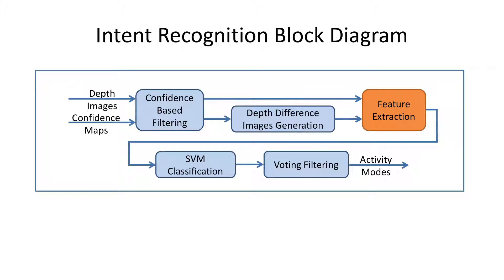Next, we take the two difference images and the corresponding depth image and divide them into rectangular subregions. From each subregion, we extract four features: mean, standard deviation, minimum, and maximum values. Then we classify the resulting feature vector using support vector machines. Finally, we apply majority voting filters to improve the reliability of the activity mode switching.